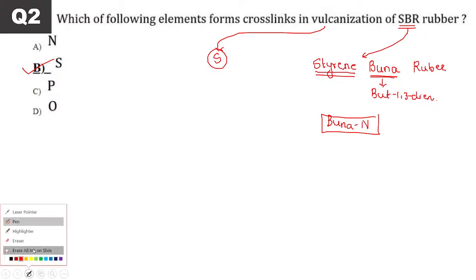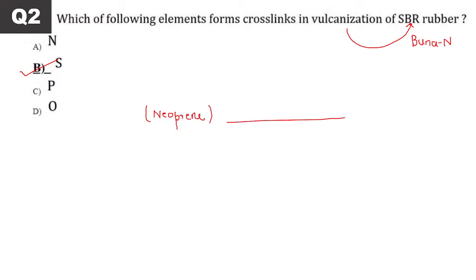We're not discussing vulcanization in detail here — the question just asks what is used in vulcanization of SBR. A second question could be: vulcanization of Buna N is done using sulfur. Third question: vulcanization of neoprene is done by — neoprene is a rubber. Answer: magnesium oxide. Buna N and SBR both use sulfur.